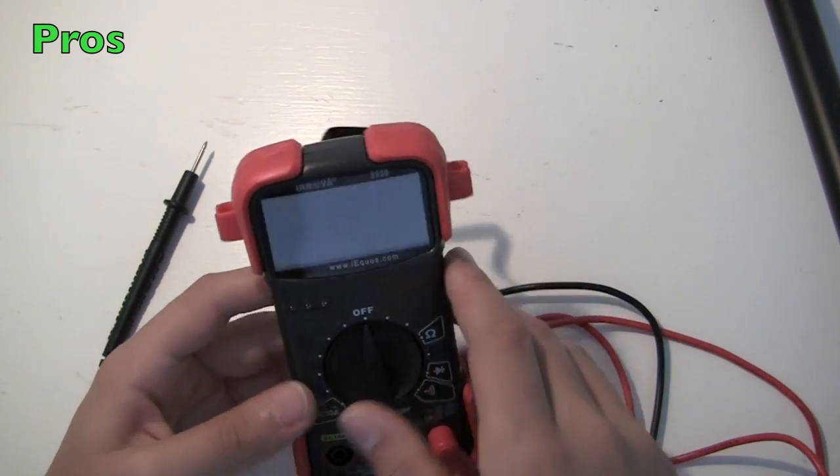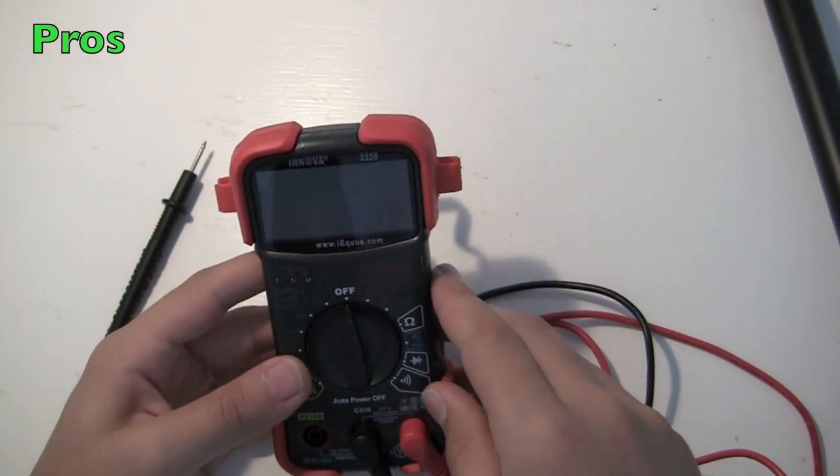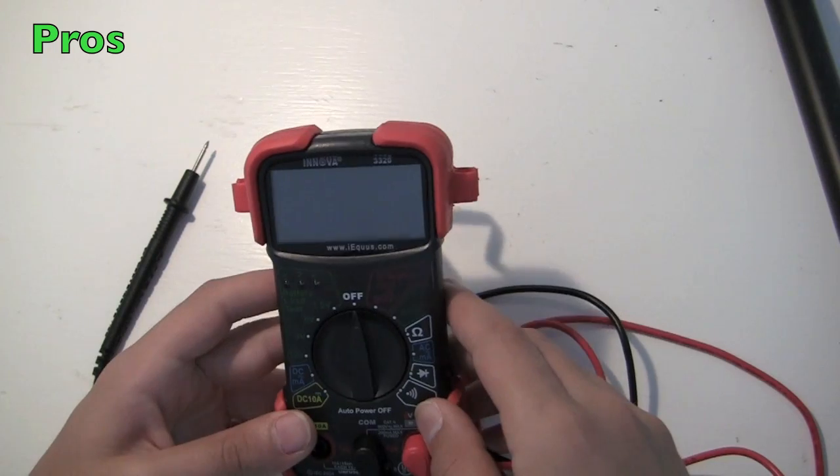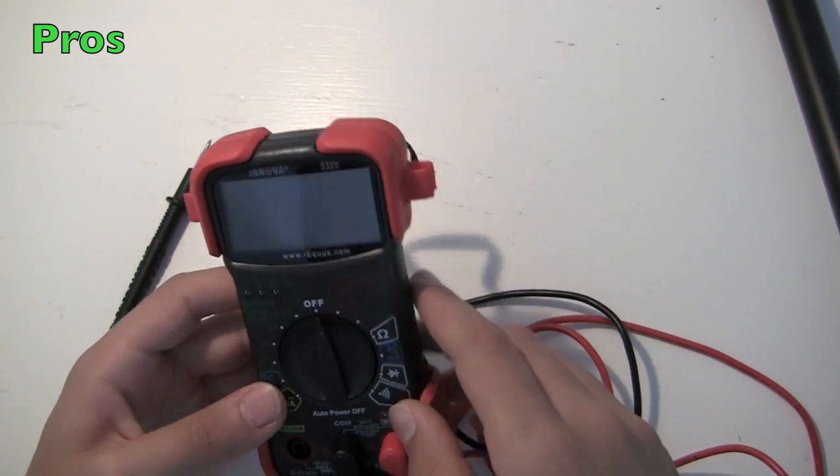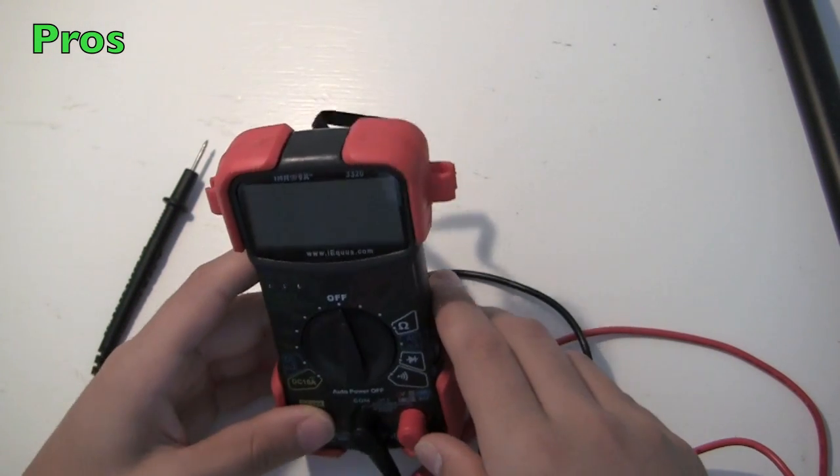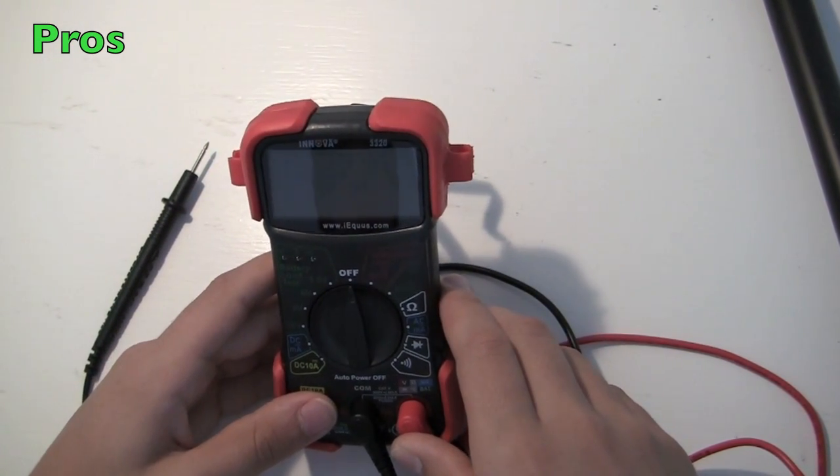Also, this multimeter comes with two AA batteries, which is a lot easier than some of those weird batteries out there that are pretty expensive. So basically all you have to do is unscrew this and put in your batteries, and it's a lot easier than finding some weird 12-volt battery.